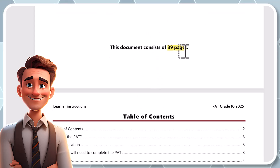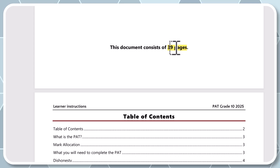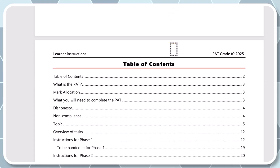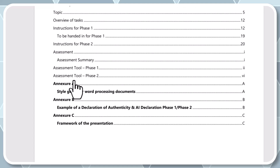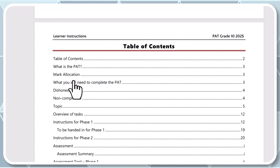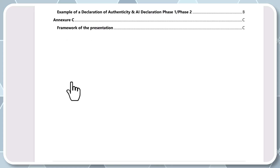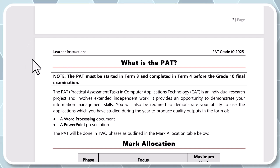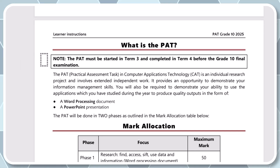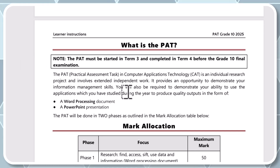It consists of 39 pages and we'll be dealing with those as we carry on. The table of contents shows everything inside the document that we need to make note of. Since you've never done a PAT before, it's important that you understand why we've got to do a PAT.